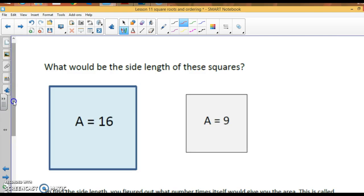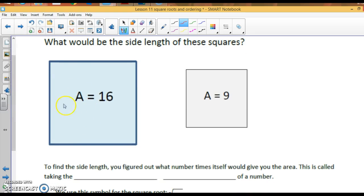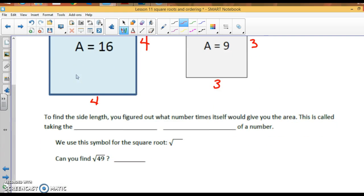Now, let's work backwards. This is learning how to take the square root. If I have the area of this square as 16, I know that the sides need to be 4, because 4 times 4 is 16. The area here is 9. This needs to be 3 times 3. So, the square root of 9 is 3. To find the side length, you figure out what number by itself would give you the area. This is called taking the square root of a number. We use this symbol for the square root. So, the square root of 49, think about what number times itself would be 49. That is a square root of a perfect square.